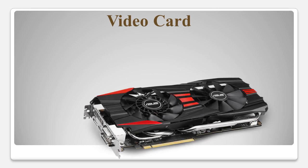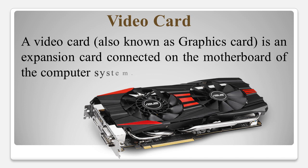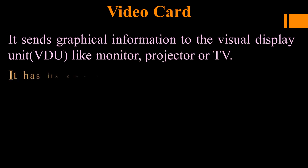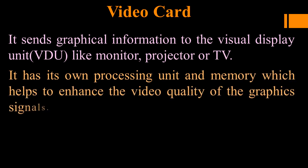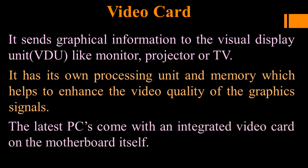Next is the video card. A video card is also known as a graphic card. It is an expansion card connected on the motherboard of the computer system. It sends graphic information to the visual display unit such as a monitor, projector, or TV. It has its own processing unit and memory, which helps to enhance the video quality of the graphic signal. The latest personal computers come with an integrated video card on the motherboard itself.